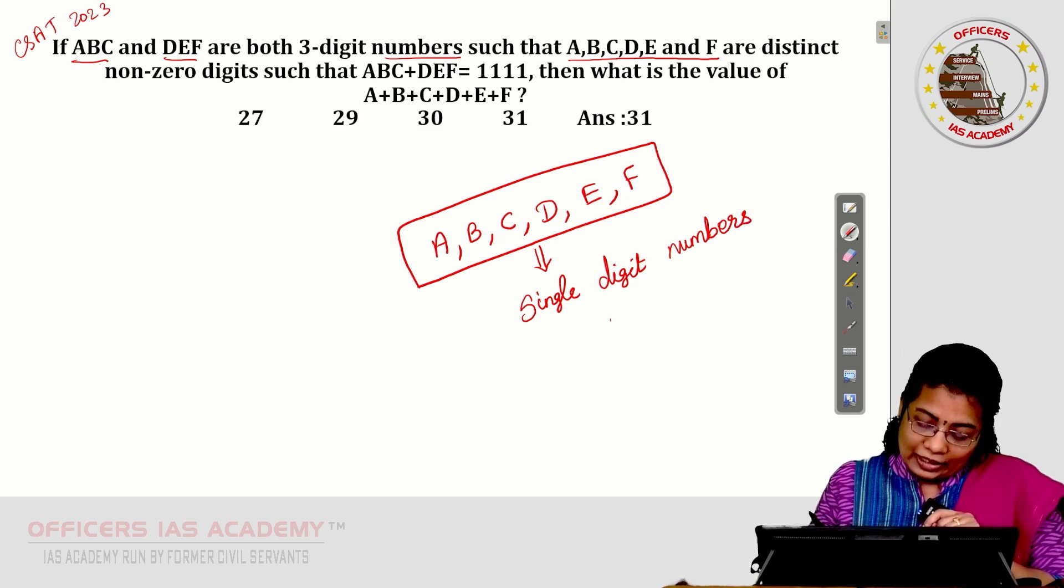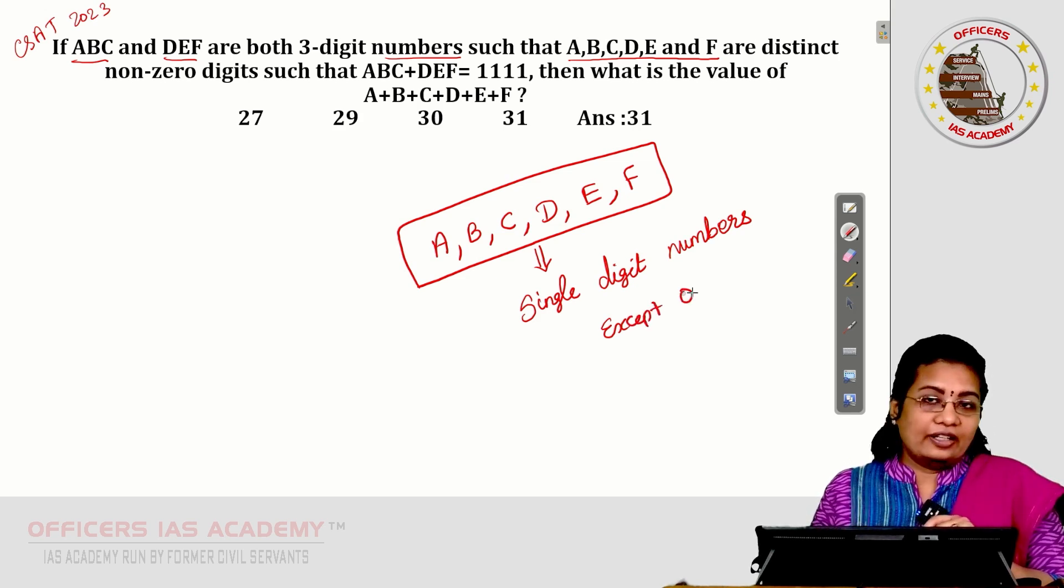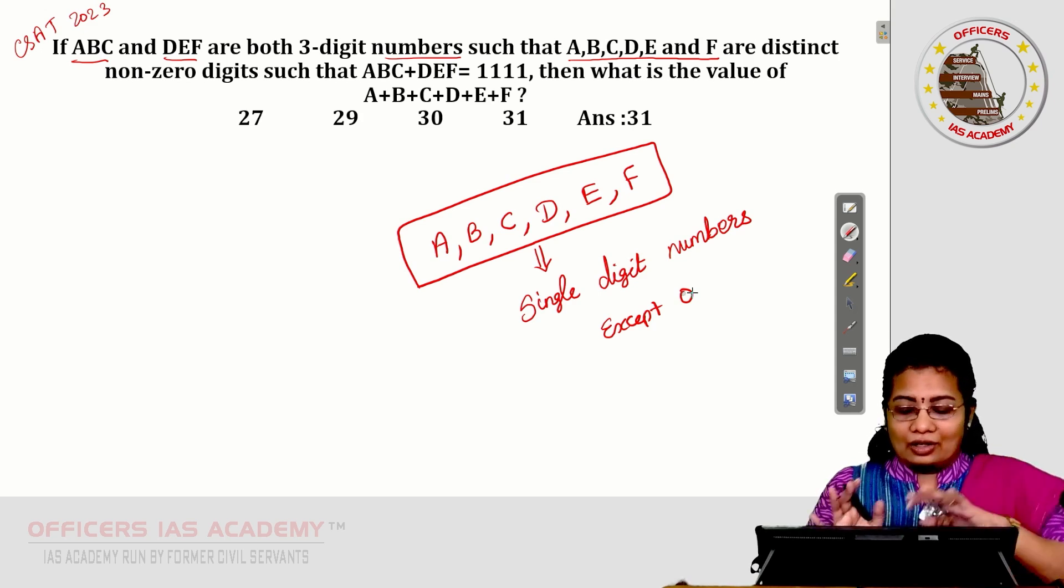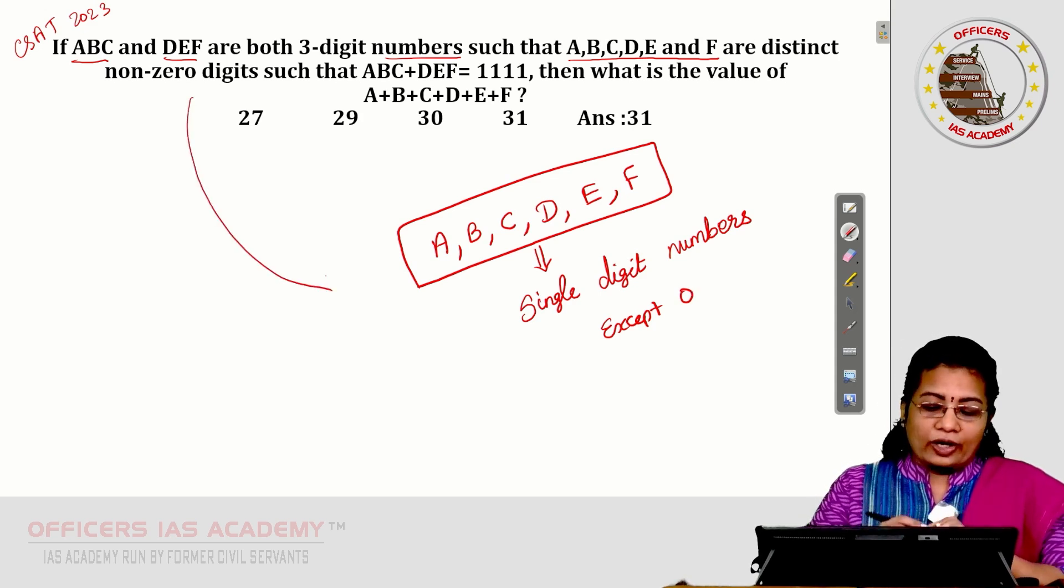So, except 0, you want to consider the balance single-digit numbers for these six but all are different. This is the thing we have decoded from the question.